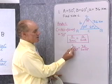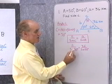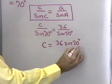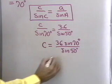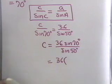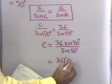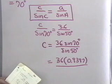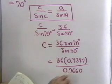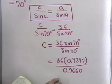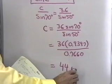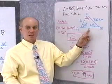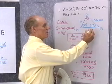To solve for side c, I multiply both sides by sine 70 degrees. So c equals 36 times sine 70 degrees, all divided by sine 50 degrees. Sine 70 is 0.9397 and sine 50 is 0.7660. Doing this arithmetic on a calculator and rounding to two significant digits, I get 44 kilometers for the length of side c.